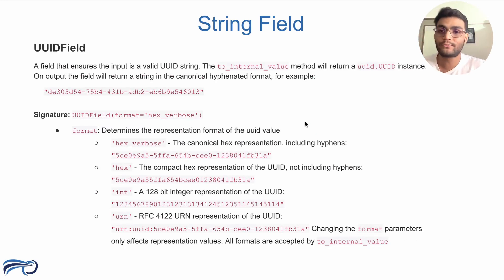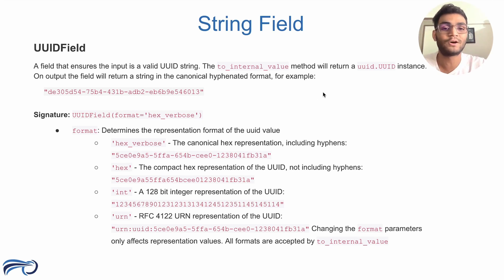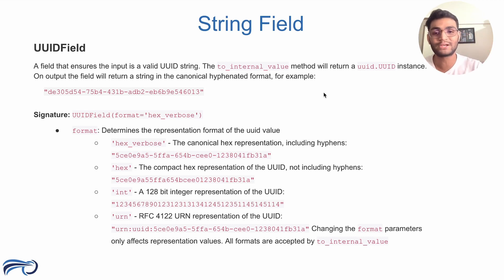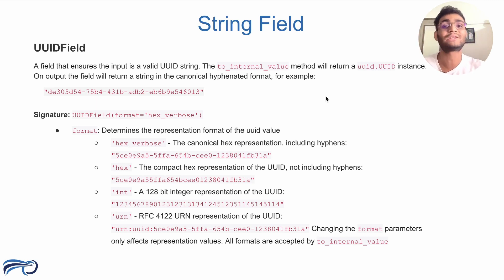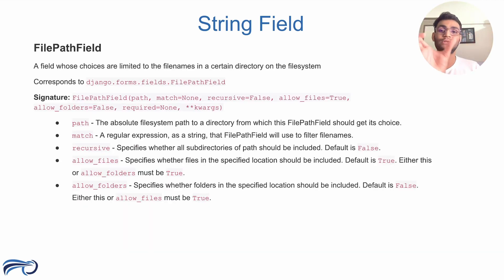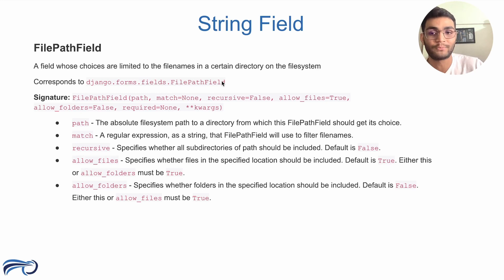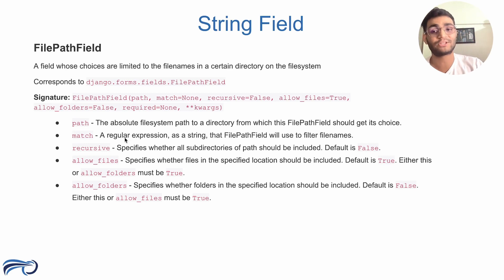Then we have UUIDField, which ensures the input is a valid UUID string — it has a built-in regex to check that the value is in a proper valid form. This slide will be available to download from the website so you can go through each field in detail. There is also FilePathField, whose choices are limited to file names in a certain directory on the file system. It corresponds to forms.FilePathField and provides a path argument for where the file needs to be stored, along with a regular expression argument and multiple other options.